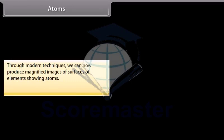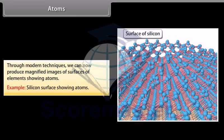Through modern techniques we can now produce magnified images of surfaces of elements showing atoms. Example, silicon surface showing atoms.